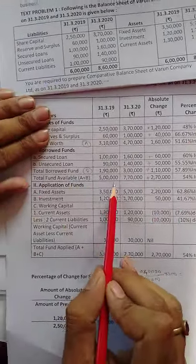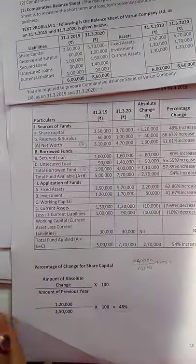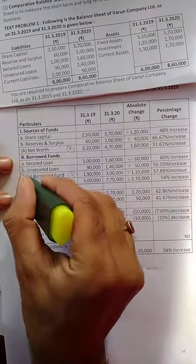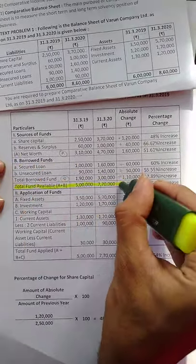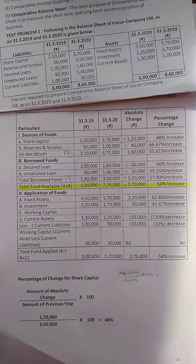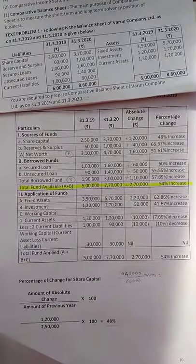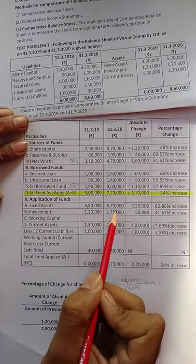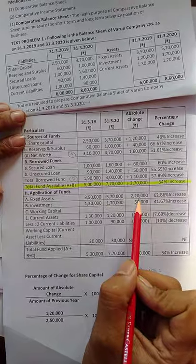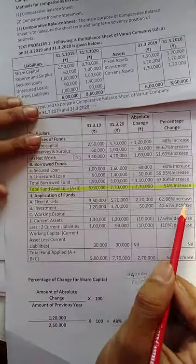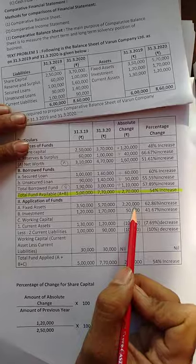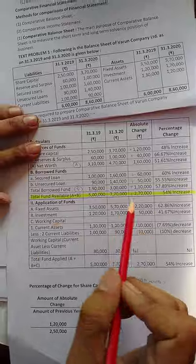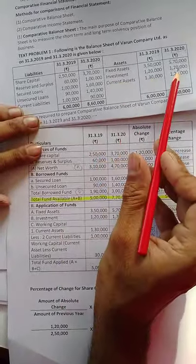The total fund available is 5,00,000 for 2019 and 7,70,000 for 2020. Now the next section — Application of Fund. Fixed assets: 3,50,000 in 2019 and 5,70,000 in 2020, that means 2,20,000 increase. Percentage: 2,20,000 divided by 3,50,000 into 100 equals 62.86 percent increase.